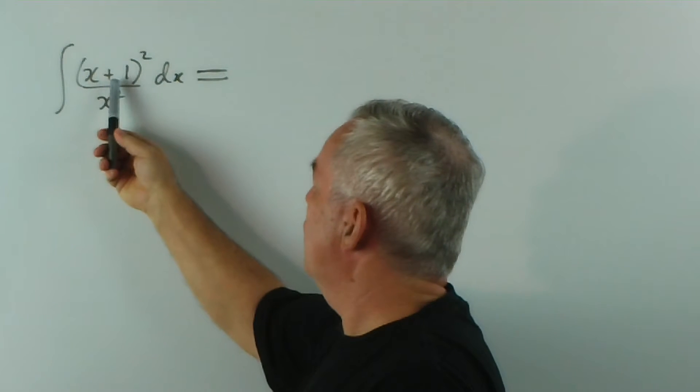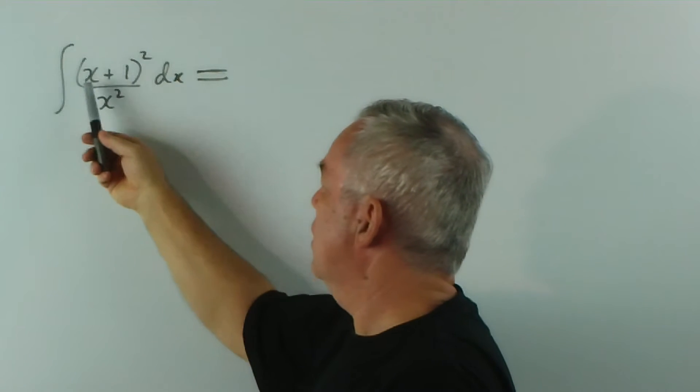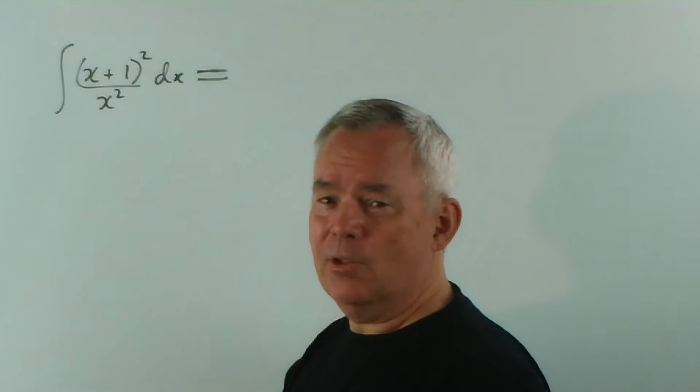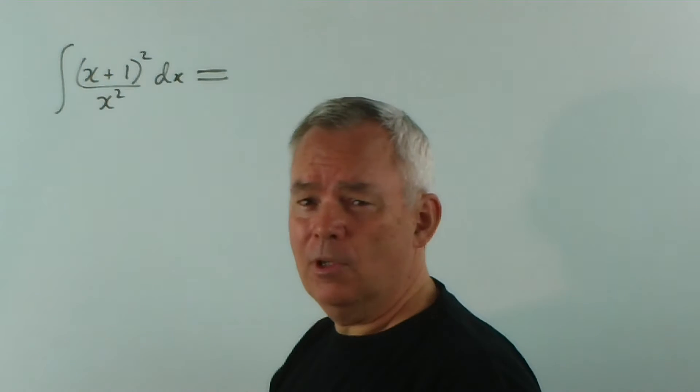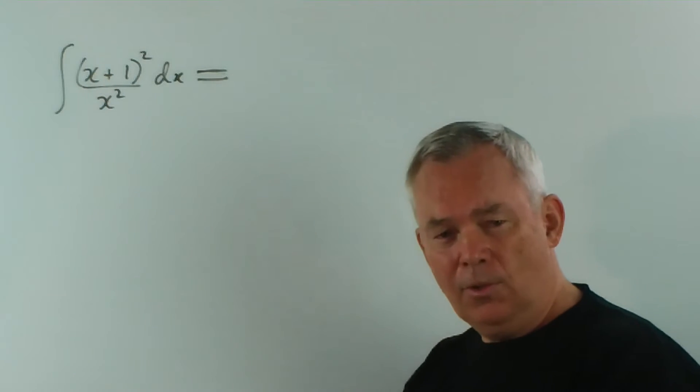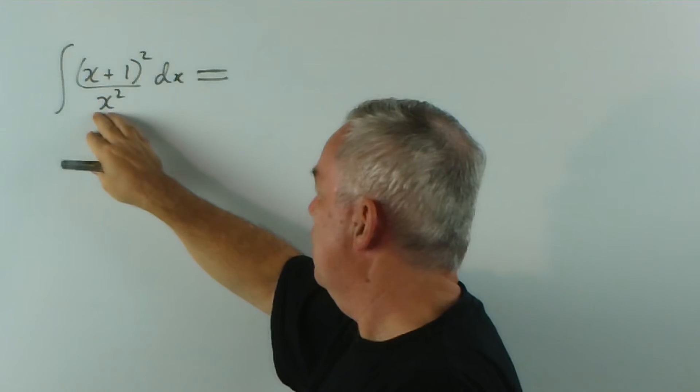Well, notice the derivative of the top of this expression inside. The derivative of x plus 1 is 1, which is not 1 over x squared. And the derivative of what's on the bottom is 2x, which is not what we have on top. So we don't have a classic logarithmic structure where the derivative is over the function.